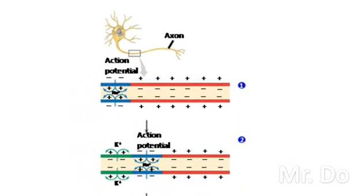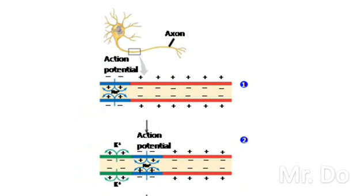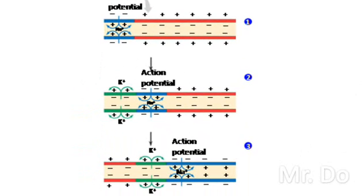So the action potential will look something like this. For the first part, notice that sodium rushes in, and then it becomes positive on the inside, and then potassium rushes out, which leads us to number 2. And then it goes to the next part of the membrane. The sodium rushes in, and then potassium rushes out behind it, and then so on repeats, and it travels down the axon, creating an action potential.